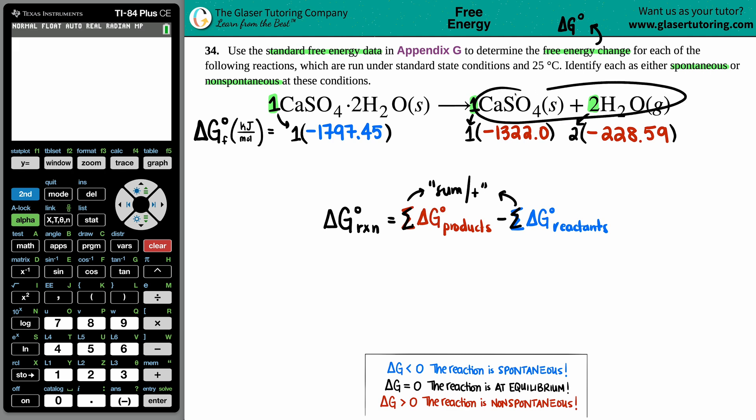The product side has CaSO₄ plus H₂O, so I have to take this value and add it to this value on the product side. Since there was only the one hydrate on the reactant side with no plus something else, I don't have to add that side up. This number would be exactly the same: negative 1797.45.